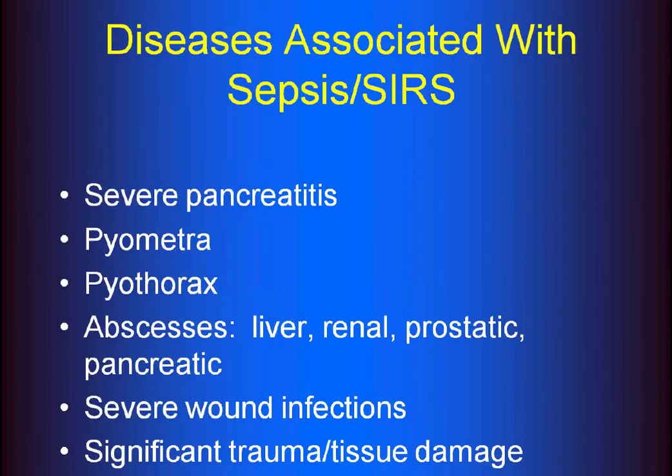When we think about a major cause of SIRS without sepsis in our patients, we can think of severe pancreatitis. Usually in our patients, pancreatitis is not caused by an infection. The caveat to that is we do see patients with pancreatic abscesses, and that patient obviously would then be septic. But for the most part, we see sterile pancreatitis. So that's going to be kind of our classic picture of a SIRS patient.